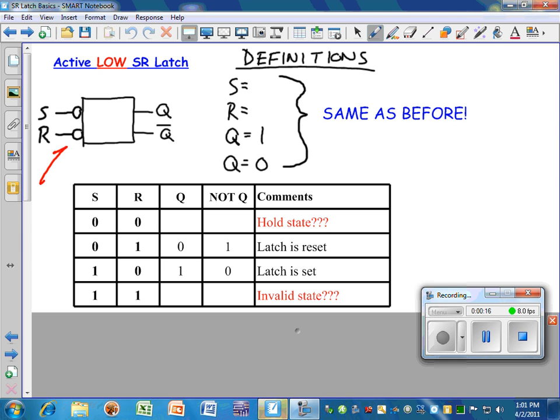Why active low? Bubbles. Bubbles on the inputs. That's why it's called the active low.